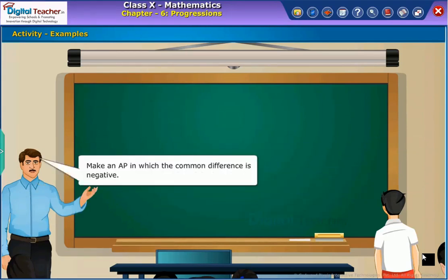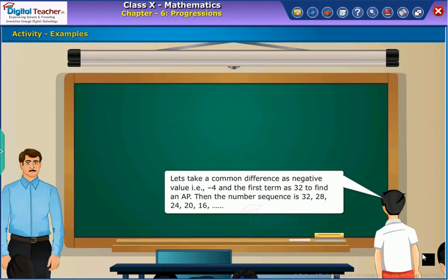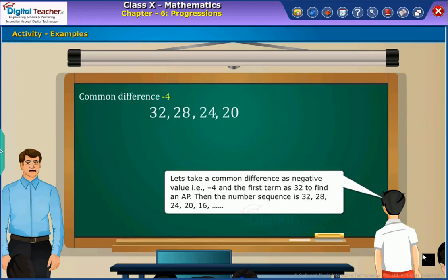Now, make an AP in which the common difference is negative. Let us take a common difference as negative value, that is minus 4, and the first term as 32, to find an AP. Then the number sequence is 32, 28, 24, 20, 16, and so on, which will form an AP.